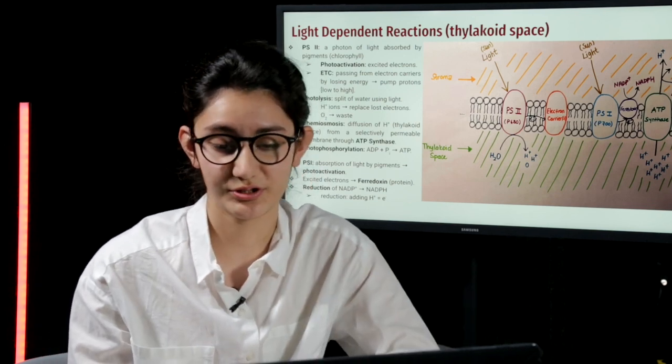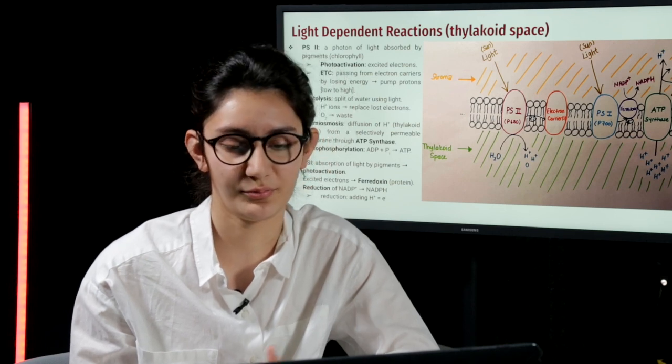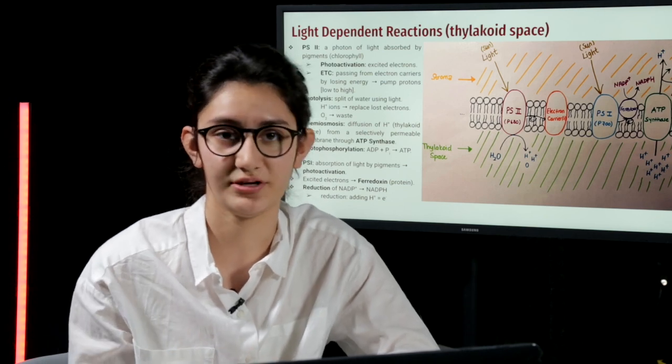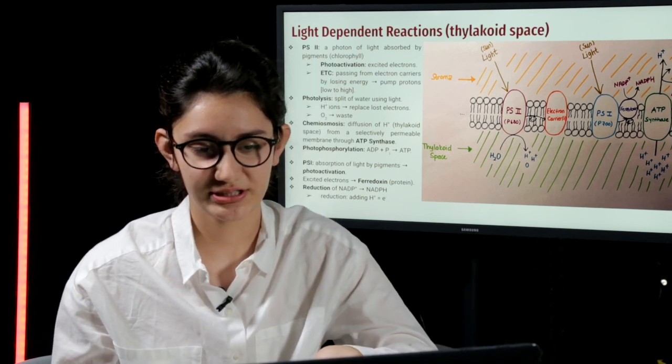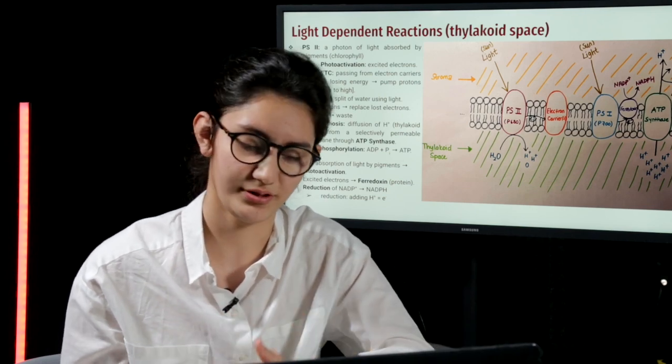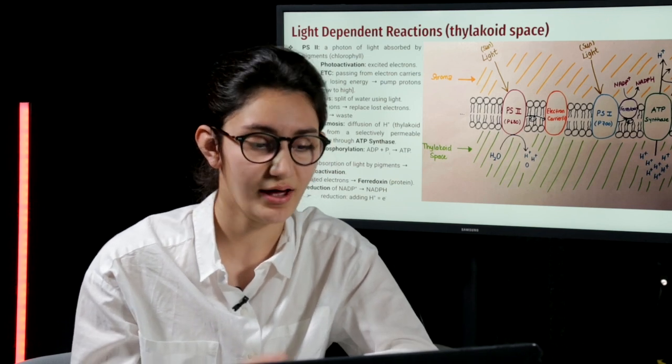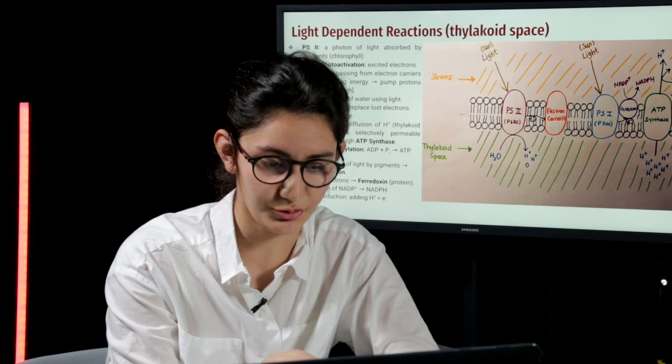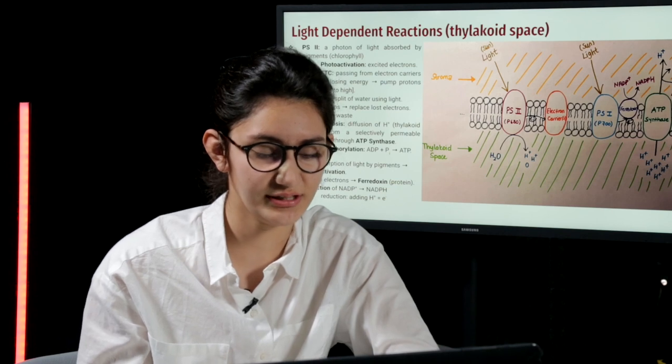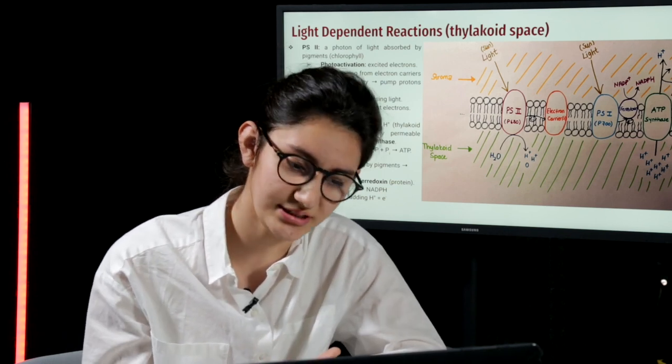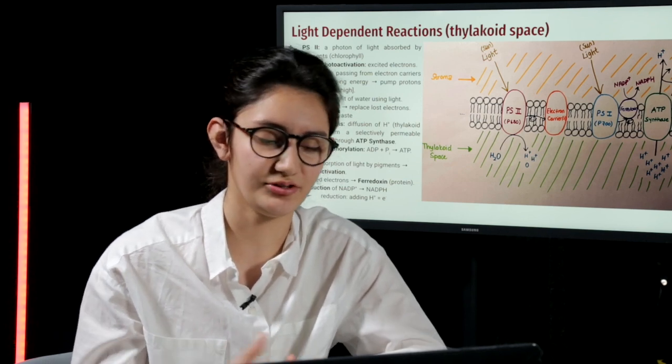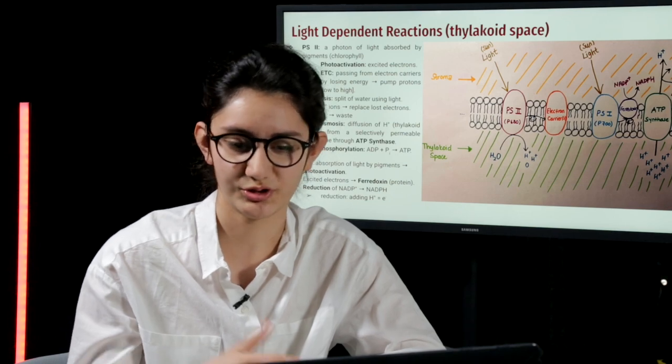Other than these processes, there is also a photosystem I, which is also called P700. This is because it can absorb light up to 700 nanometers. This photosystem as well absorbs sunlight and the pigments and also the electrons in that photosystem are excited. However, after that photoactivation occurs, the excited electrons go to a protein called ferredoxin. This protein is used to reduce NADP plus into NADPH. This reduction is basically adding hydrogen ions or adding electrons to a molecule.